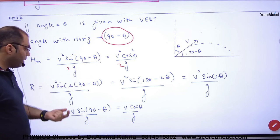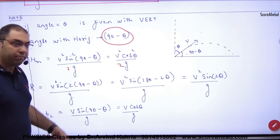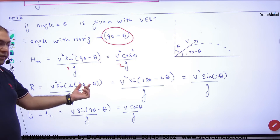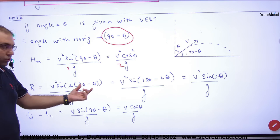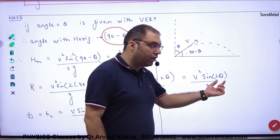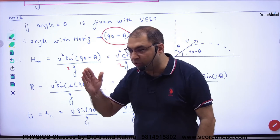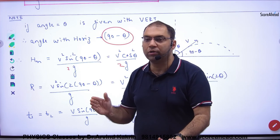Maximum height. Now the range. The range formula we have done was V square sin 2 theta by g. But here is not theta. Here is 90 minus theta. So again sin of 180 minus 2 theta, so the answer will be sin 2 theta. And the range remains the same. If the angle of projection is theta or 90 minus theta, then the range will remain the same.